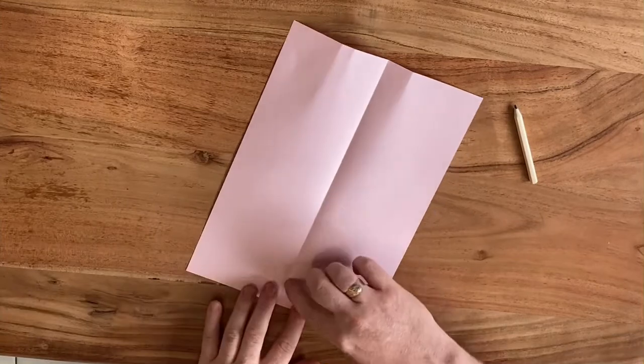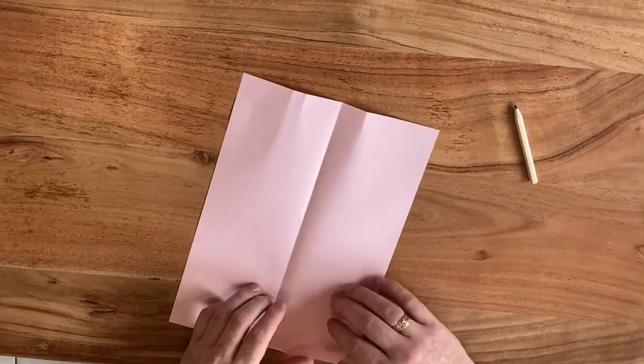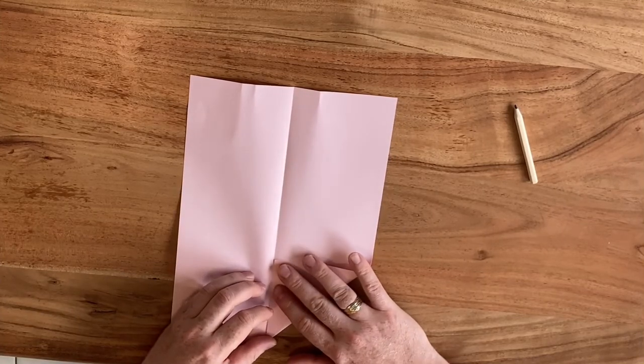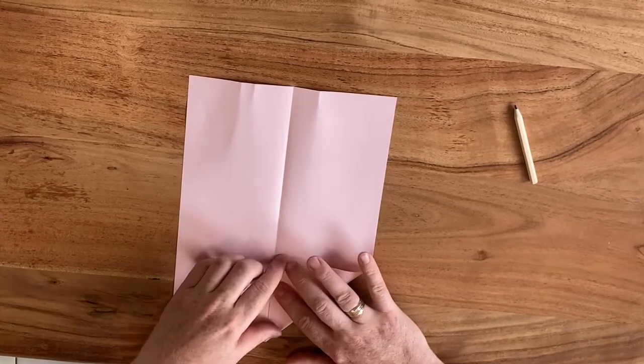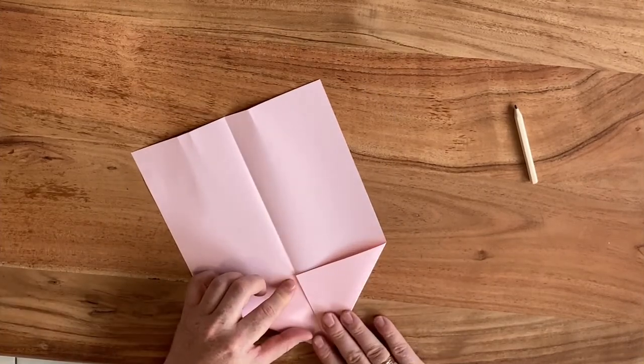Then bring the paper around so your center crease is a valley fold, not a mountain fold. We're going to bring these corners towards the center crease on both sides.